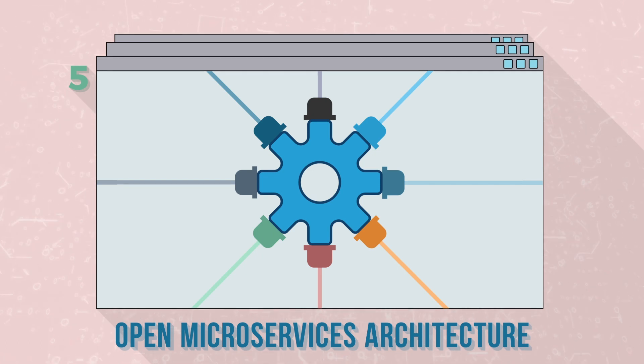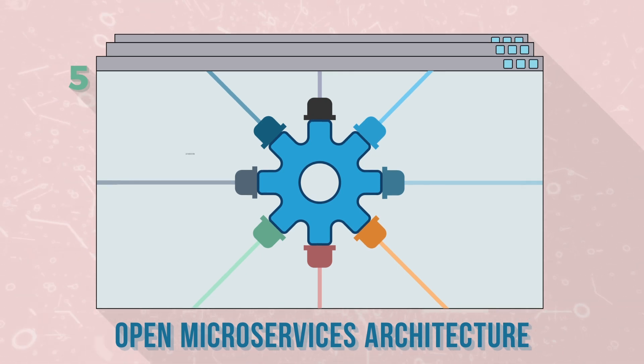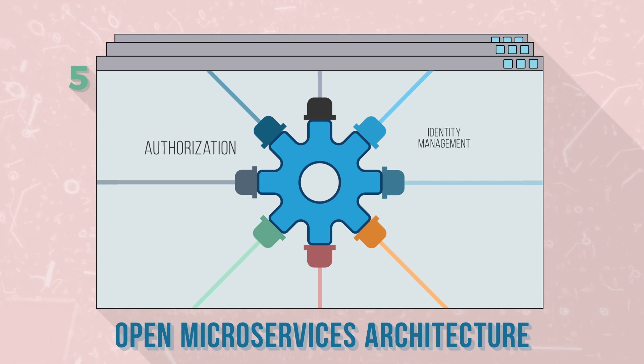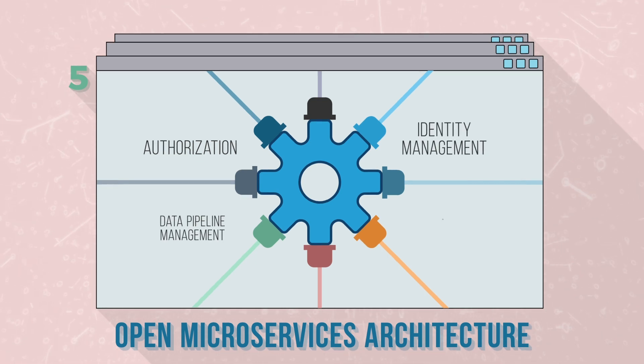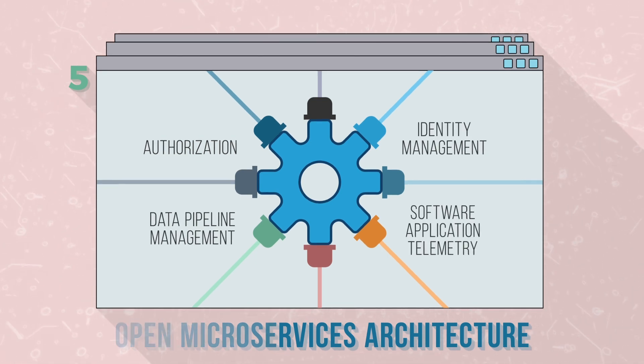An open microservices architecture enables third-party applications to be built on DOS, including open microservices APIs for operations such as authorization, identity management, data pipeline management, and software application telemetry.